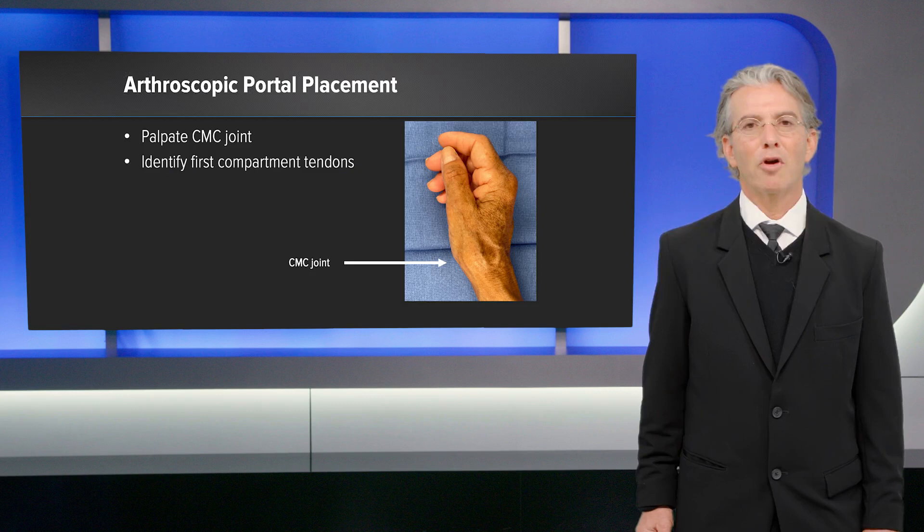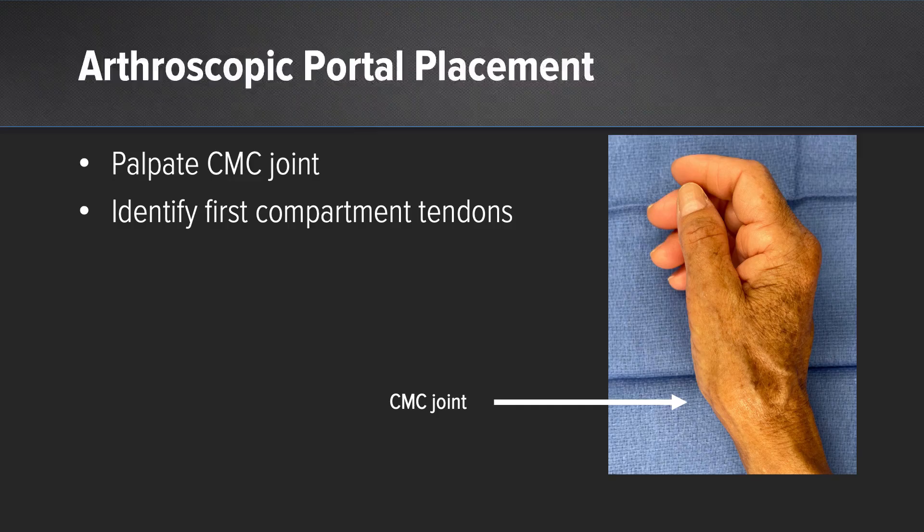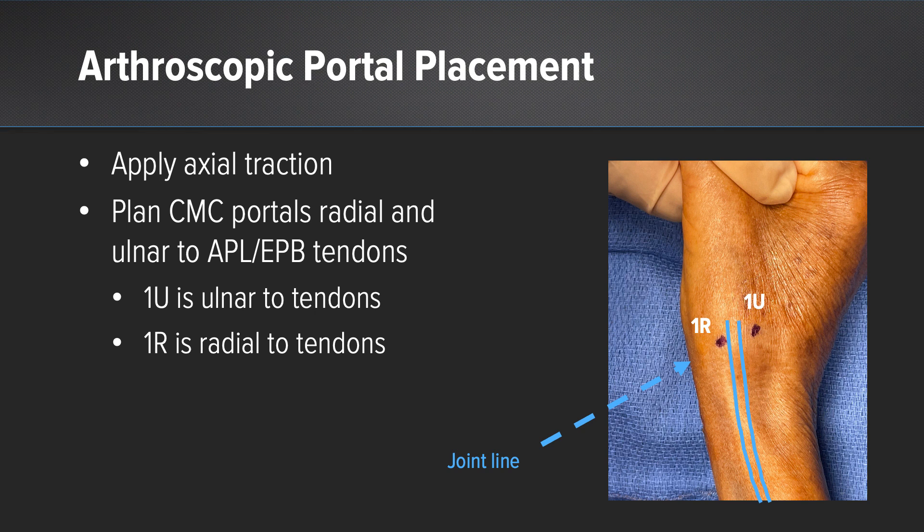For arthroscopic portal placement, first palpate the CMC joint, and then identify the first extensor compartment tendons. The 1U portal is placed ulnar to the tendons, and the 1R portal is placed radial to the tendons.